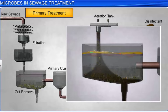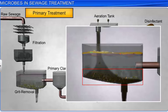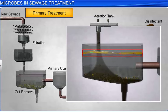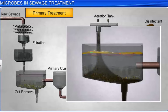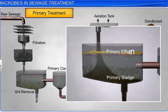During sedimentation, most organic and inorganic solids settle, while floating materials like grease and plastic rise to the surface and are skimmed off. The settled solids are called primary sludge, while the floating material comprises primary effluents.